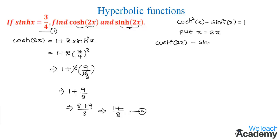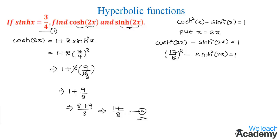As we know the value of hyperbolic cos 2x is 17/8 from equation 2, we get (17/8) squared minus hyperbolic sine squared 2x equals 1. Squaring gives 289/64 minus hyperbolic sine squared 2x equals 1. Transferring 1 to the left-hand side, we get 289/64 minus 1 equals hyperbolic sine squared 2x.